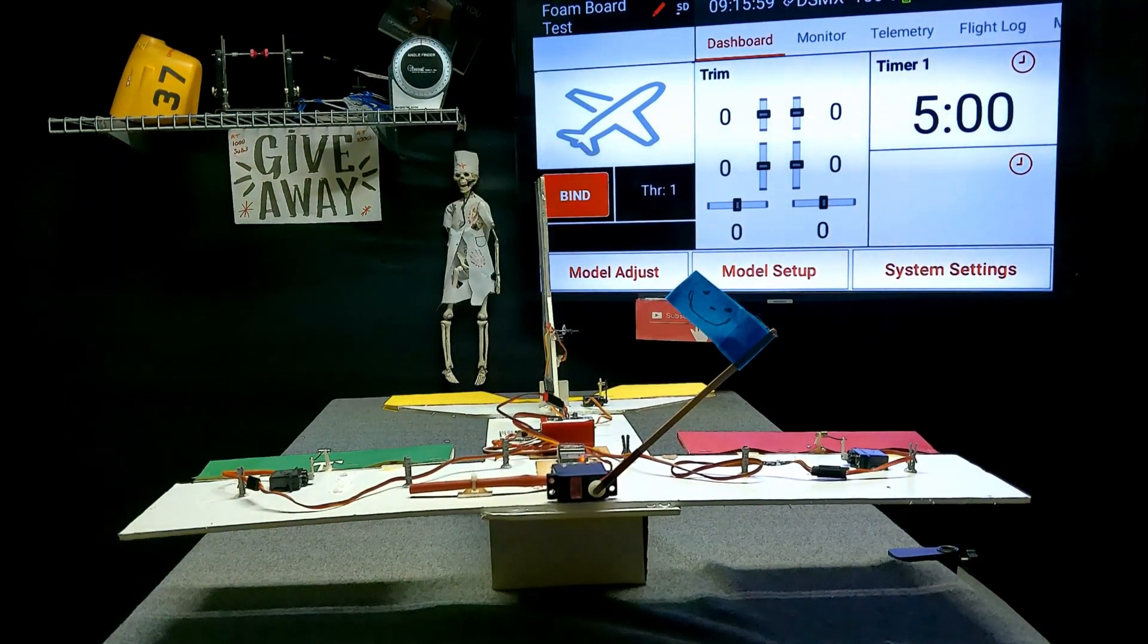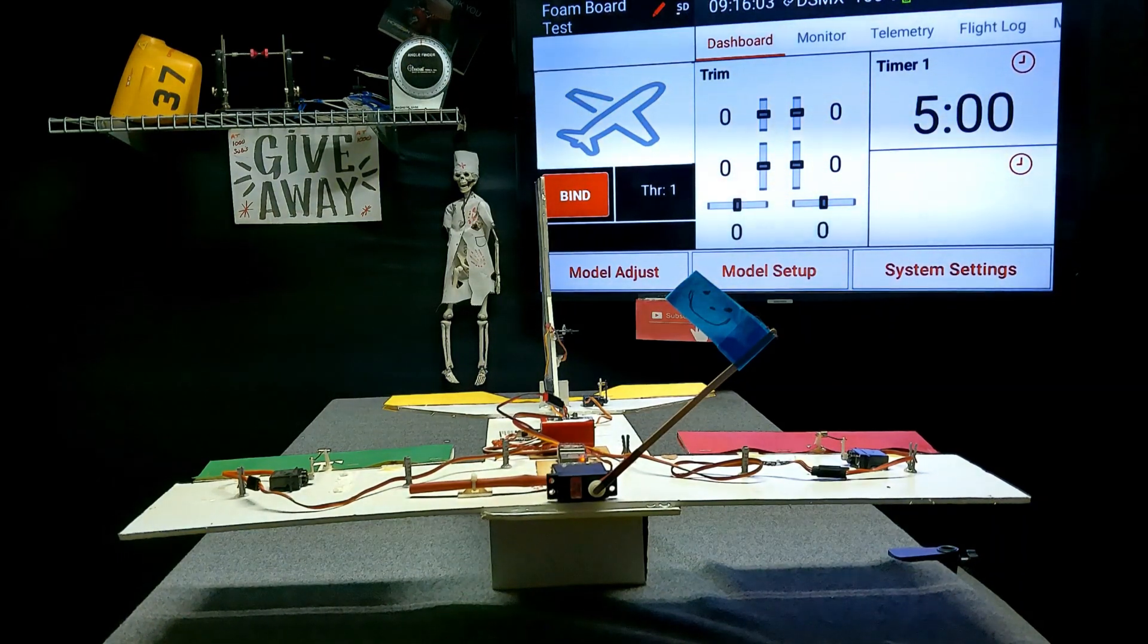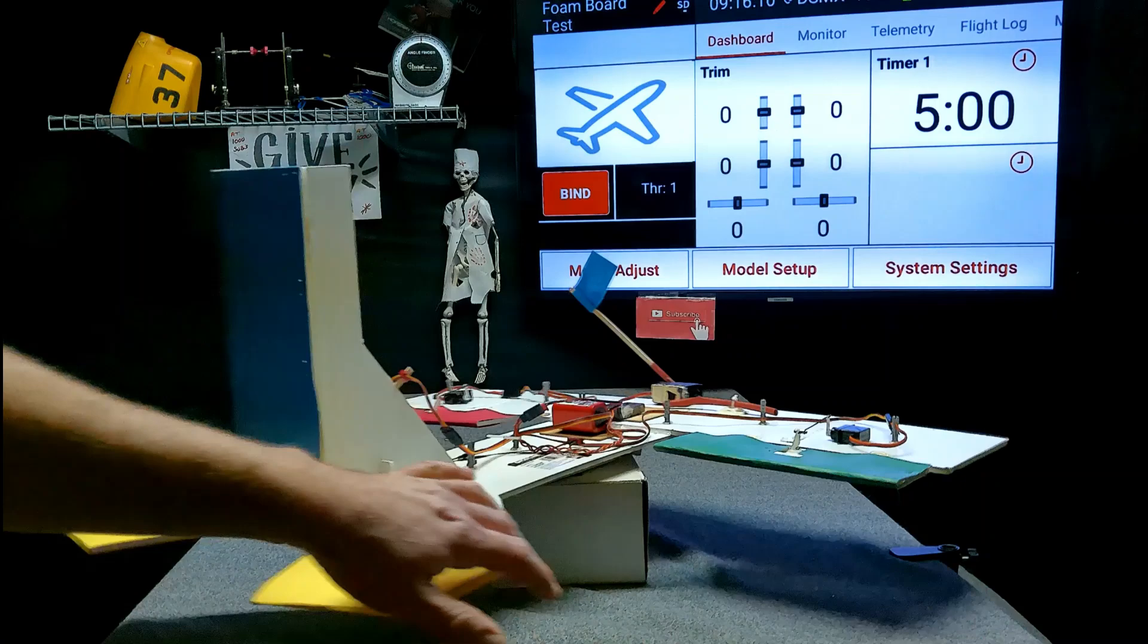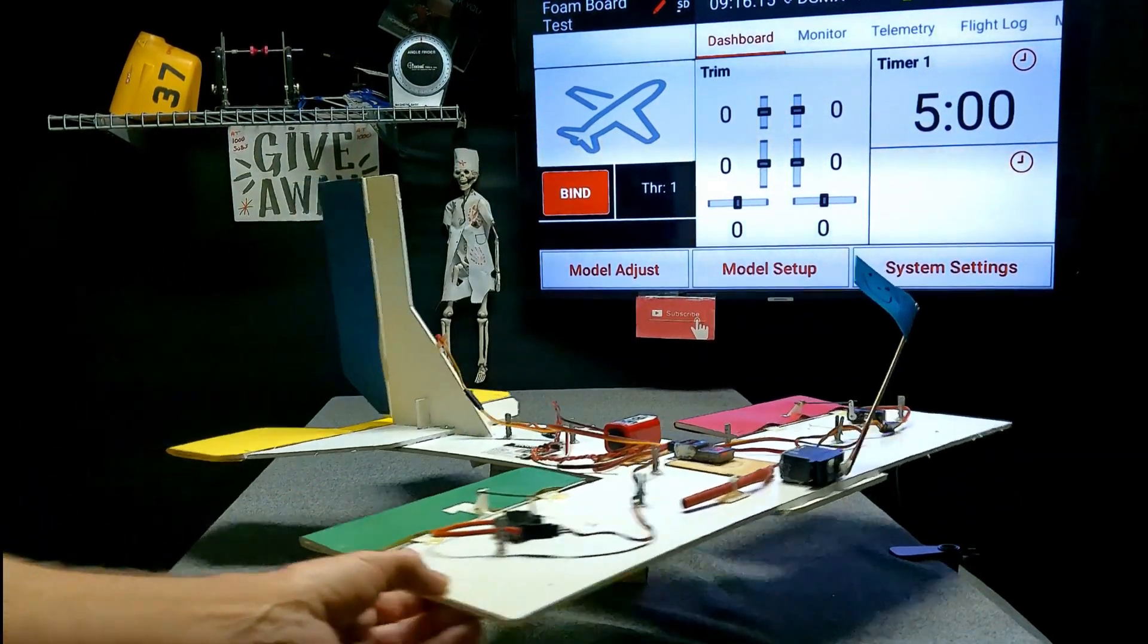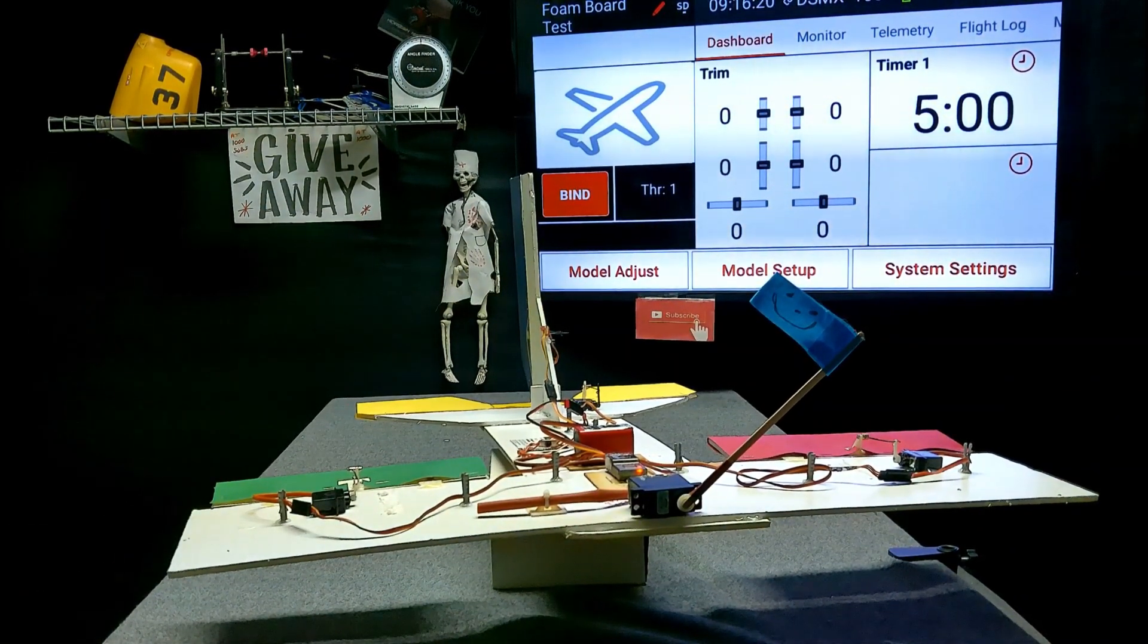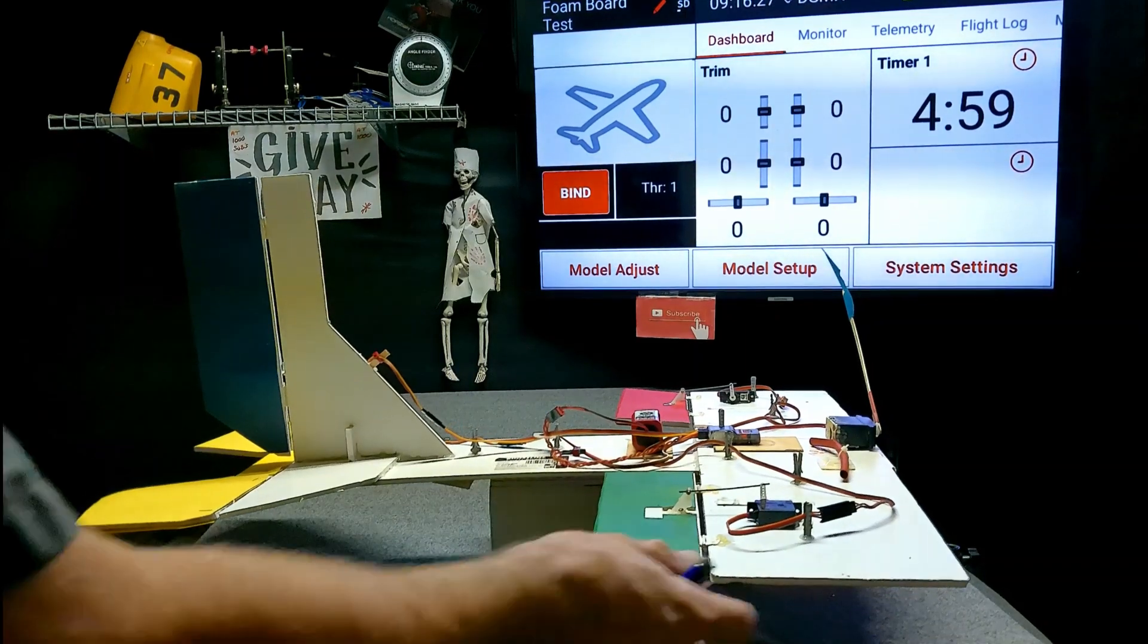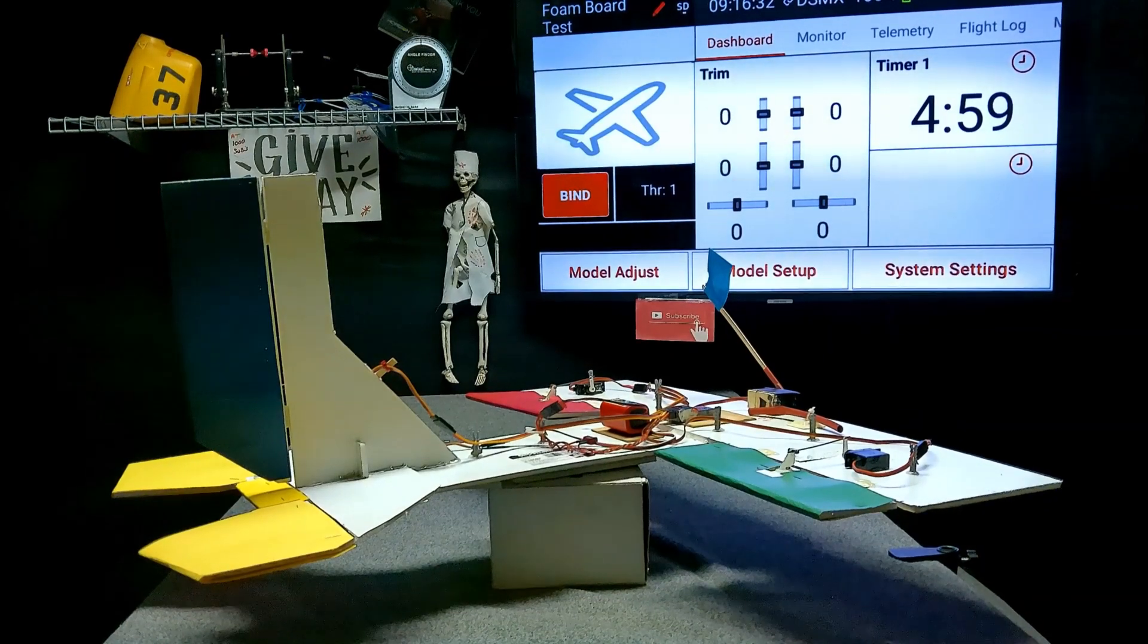On the screen is my iX12 transmitter so I can show you guys in real time what we're doing. This is a one-of-a-kind test foam board airplane—it does not fly, it's simply to learn on. The little blue flag acts as the motor; as we give full throttle, the flag moves. Throttle cut is on now.